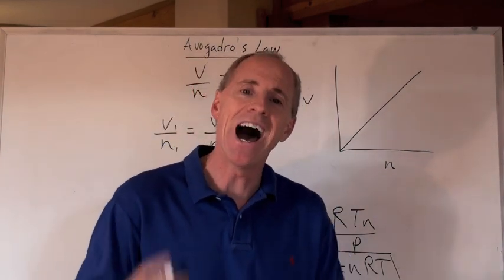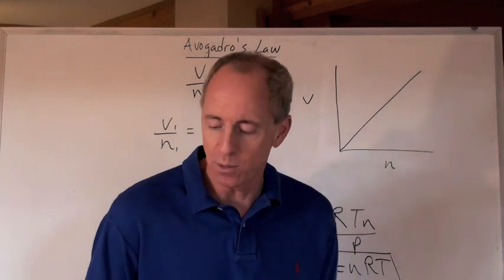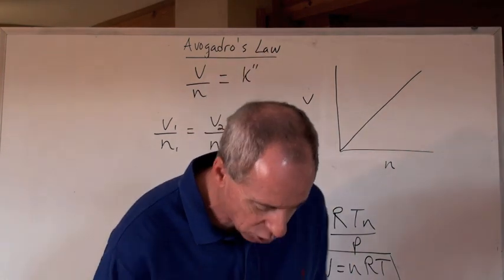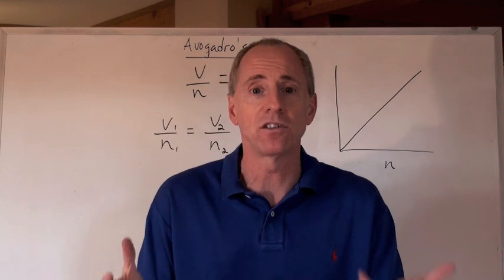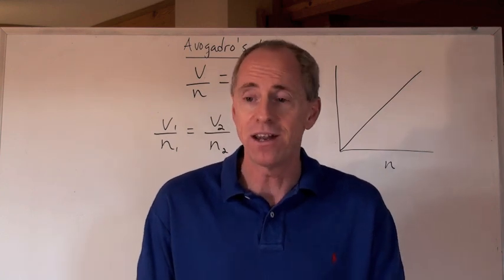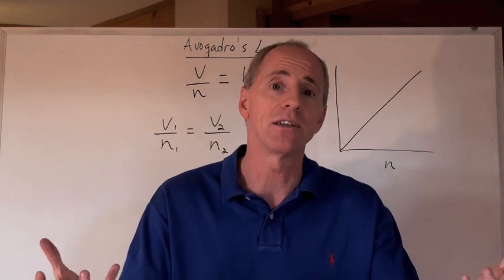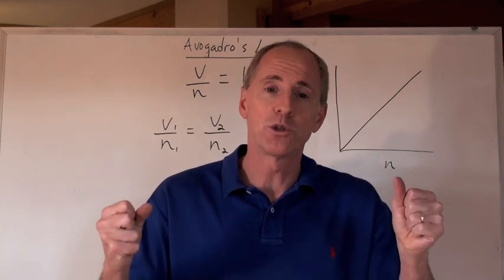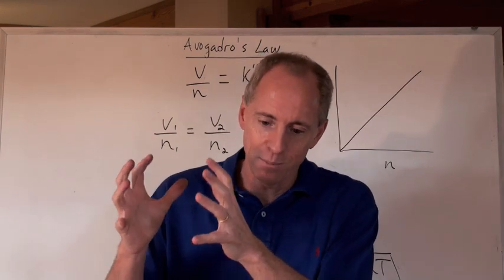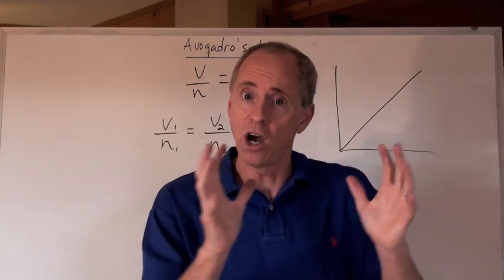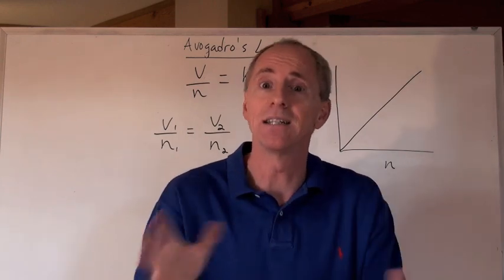And by the way, we say that it's ideal gas because basically Avogadro found out that you could treat all gases pretty much the same, and that if you had one mole of one gas and one mole of another gas, you'd actually have the same number of particles of that gas. So therefore we treat them, and it's not totally true that one mole of one gas completely occupies the identical volume of another, but it's close enough that we can treat them ideally. That's the idea.